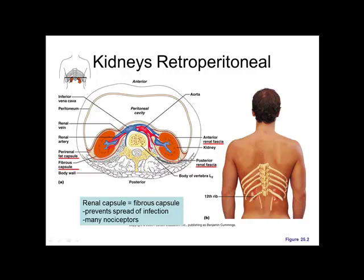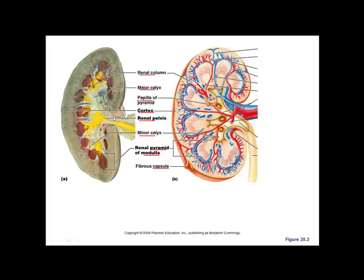The kidneys are wrapped in a fat capsule to protect them if you get hit or bumped. They're also wrapped in a fibrous capsule whose purpose is to prevent the spread of infection. There are lots of nociceptors on this capsule. A bad kidney infection is terribly painful — imagine wrapping your kidney in paper; when infection causes swelling, the paper tears, and those pain receptors fire.